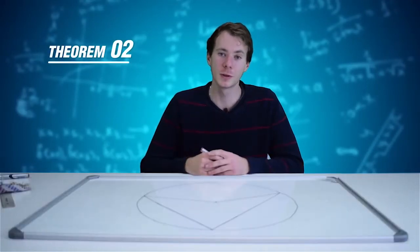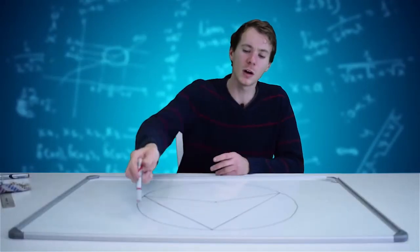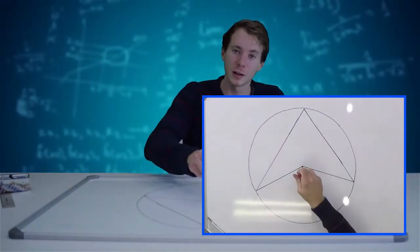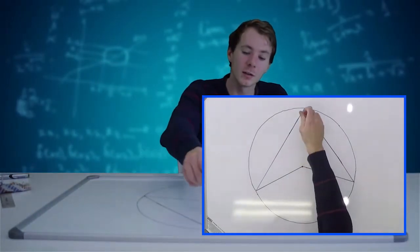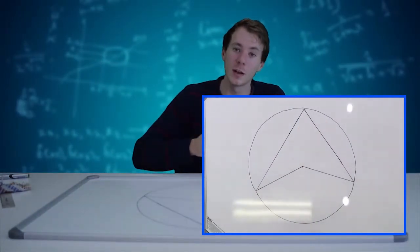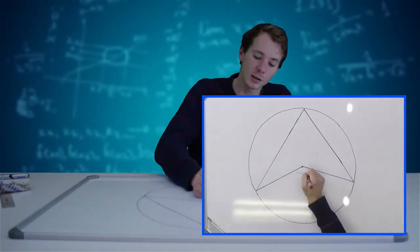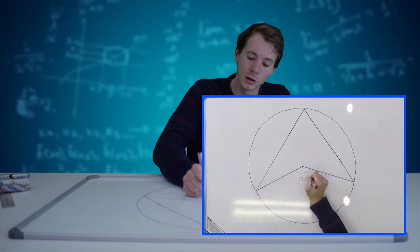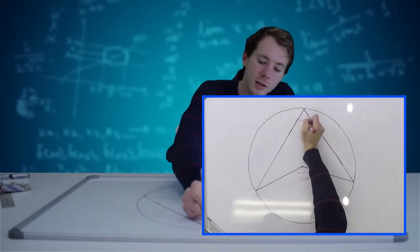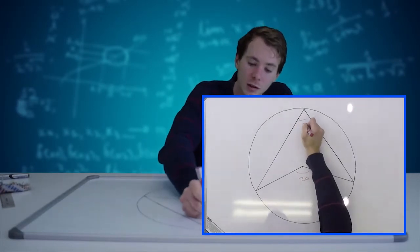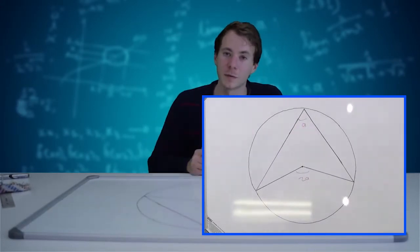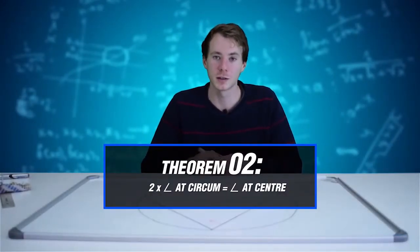Now we're on to Theorem 2. Theorem 2 states that if I have an arc subtending an angle at the center and at the circumference, the angle at the center is going to be twice the size of the angle at the circumference. The reason for that is: two times the angle at the circumference is equal to the angle at the center.